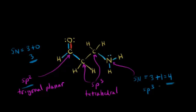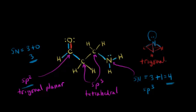But the geometry of that nitrogen is not tetrahedral. It has three sigma bonds and one lone pair of electrons in an sp3 hybridized orbital. When we ignore the lone pair of electrons — as you always do when looking at geometry — we can see the shape: the nitrogen is bonded to carbon, hydrogen, and hydrogen. We call this trigonal pyramidal, so the geometry around that nitrogen is trigonal pyramidal.